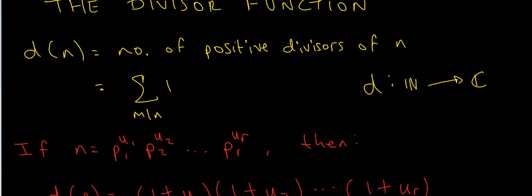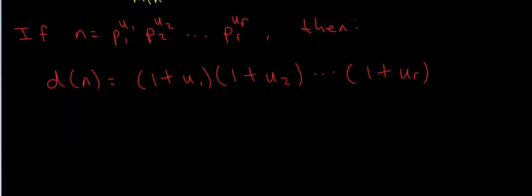In the previous video we also used a formula which said that if n has the prime factorisation p1^u1 times p2^u2 times p3^u3 all the way up to pr^ur, then we can calculate d(n) — the number of divisors of n — by taking (u1+1) times (u2+1) times (u3+1) and so on up to (ur+1).